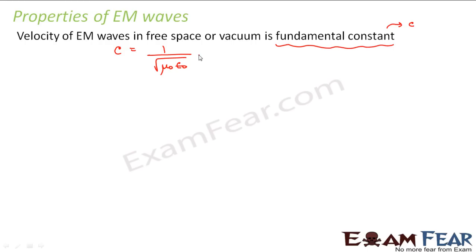He tried to determine the wavelength of the wave and tried to evaluate the speed of the electromagnetic waves. All these values were obtained by Hertz in his experiment — they are all experimentally determined values. So the first property is that the velocity of electromagnetic waves in free space or vacuum is a fundamental constant, that is the speed of light, 3 × 10⁸ meters per second.